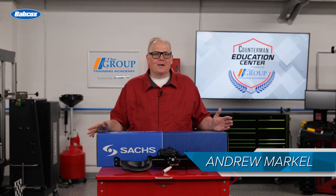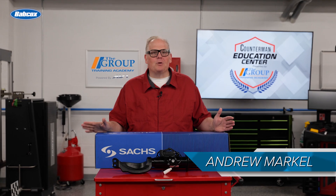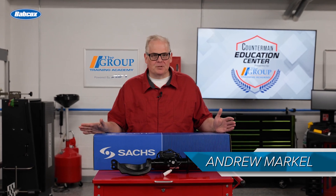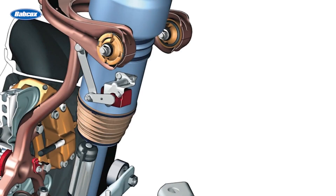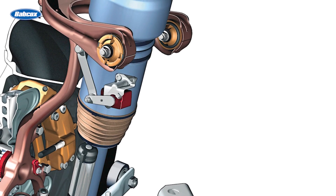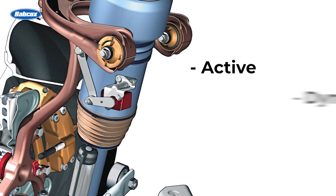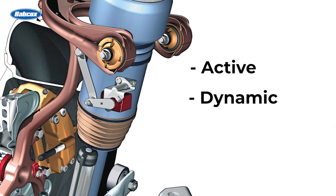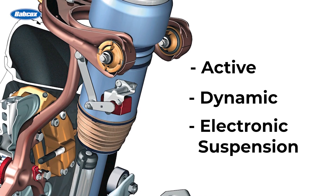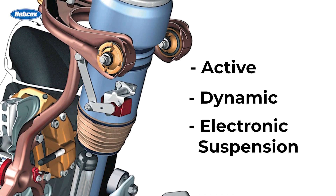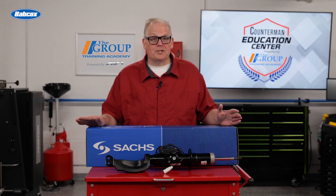You might encounter multiple replacement options when looking up shocks and struts for a vehicle. You might see the words active, dynamic, or electronic suspension in the parts description. What does it mean for your customer and part selection?